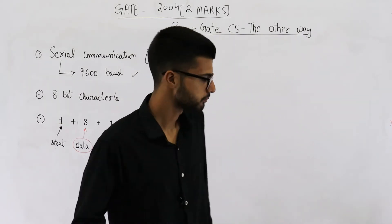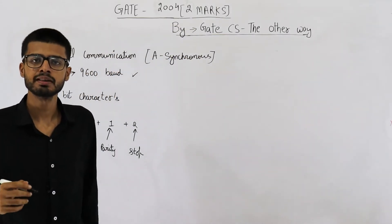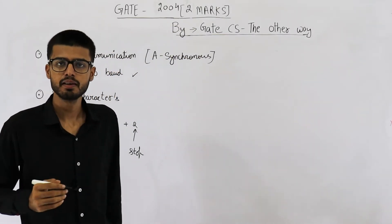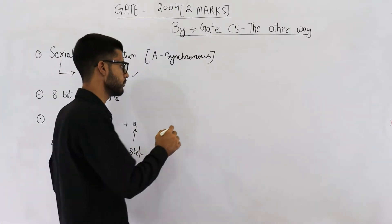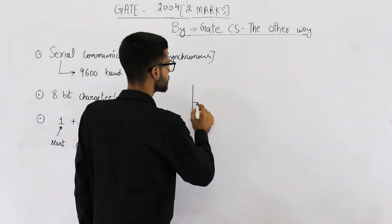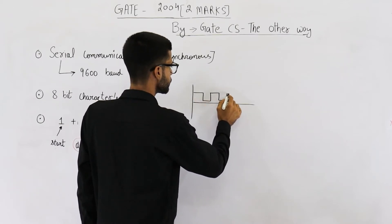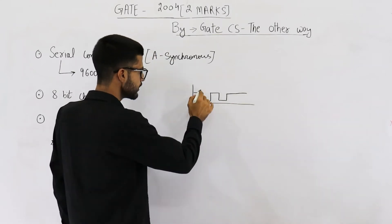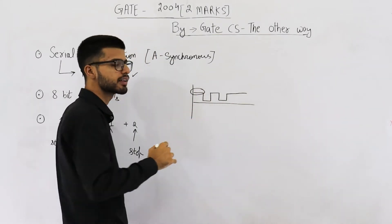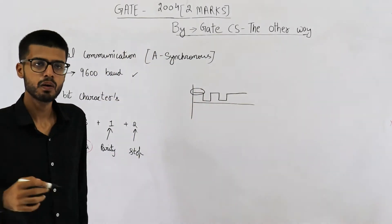What is baud? Baud means symbols per second or signaling events per second. For example, in digital signals, we send different levels of voltages. This high voltage is called a signaling event or a symbol.